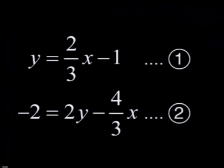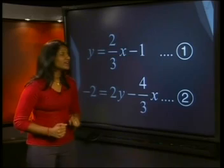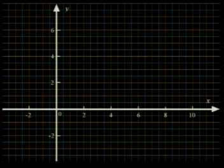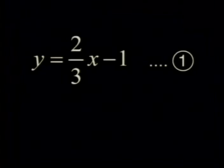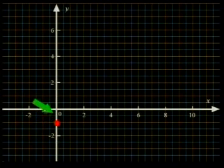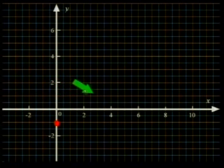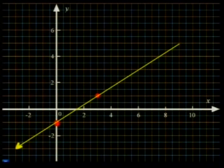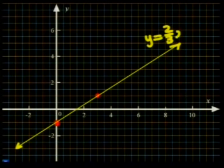What about this new system of equations, labelled equation 1 and equation 2? Equation 1 is already in y-intercept form. The y-intercept is at negative 1, and the gradient is positive 2/3. From the y-intercept, I move up 2 units and then 3 units to the right. We draw a straight line through these two points and label it y = 2/3 x − 1.